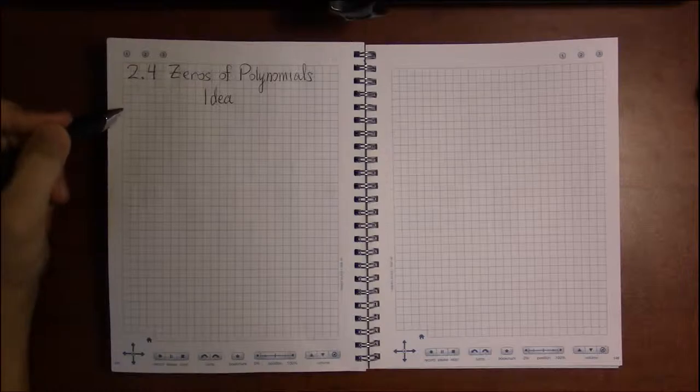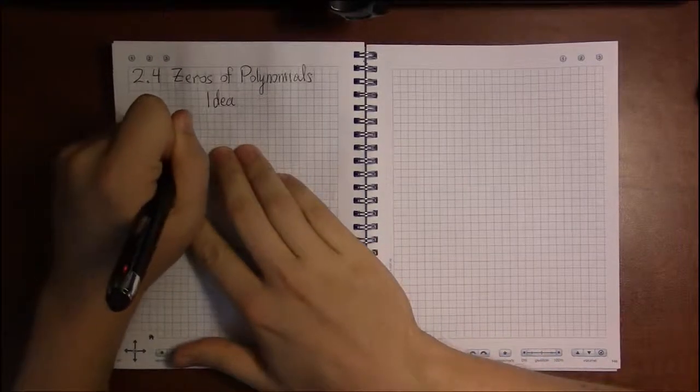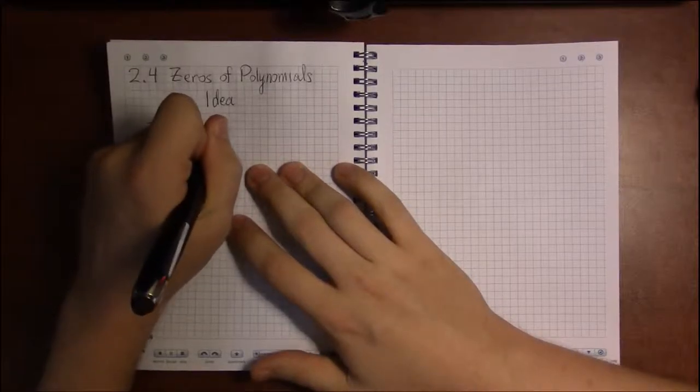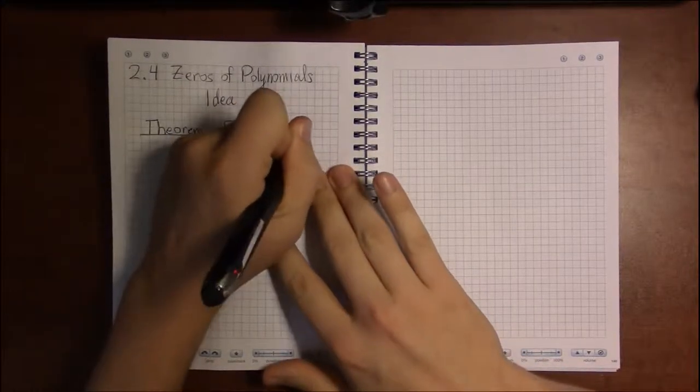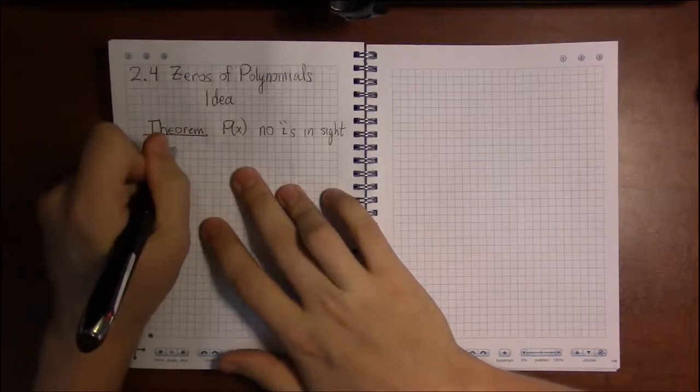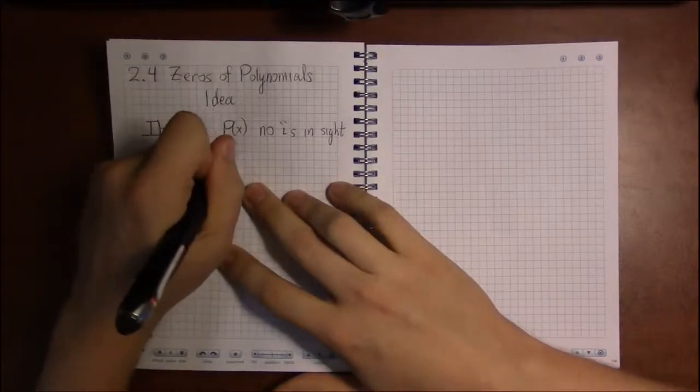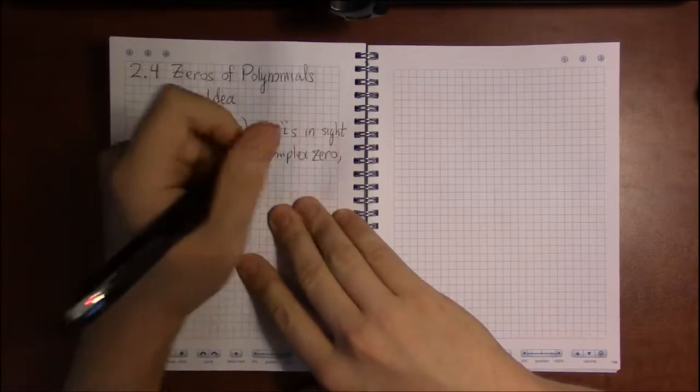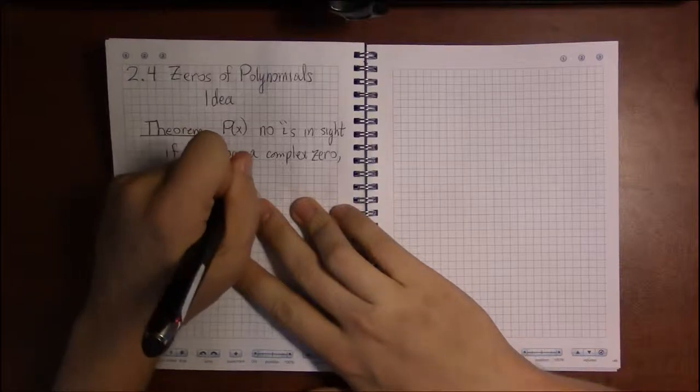In the last video we were observing some coincidences that turn out to be absolute facts of algebra. First, if you've got a polynomial P(x) with real coefficients, in other words no i's in sight, then if this has a complex zero, the conjugate is also a zero. This is what we call conjugate pairs.